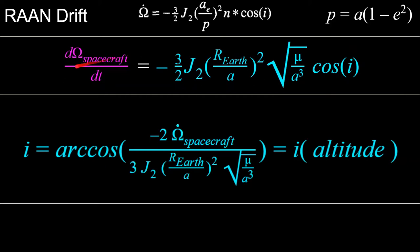And this gives us this equation right here for the derivative of the right ascension. But we are looking to solve for inclination as a function of altitude. So we'll rearrange this following equation to get this inclination as a function of altitude is equal to the arc cosine or inverse cosine of negative two times the time rate of change of the right ascension of the spacecraft, three times J2 radius of Earth over semi-major axis squared, square root of mu over A cubed, where mu is the gravitational parameter of the Earth.